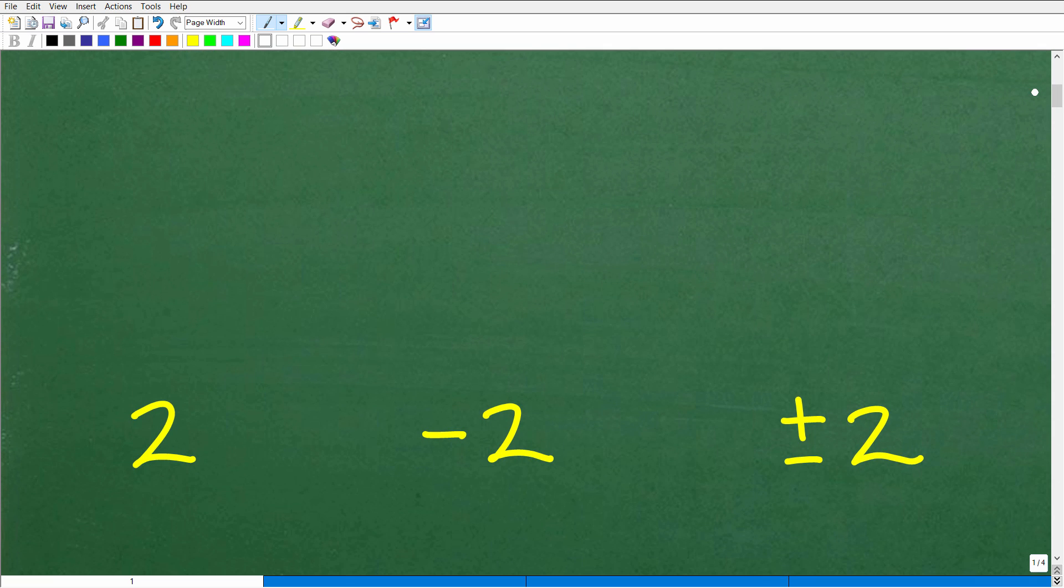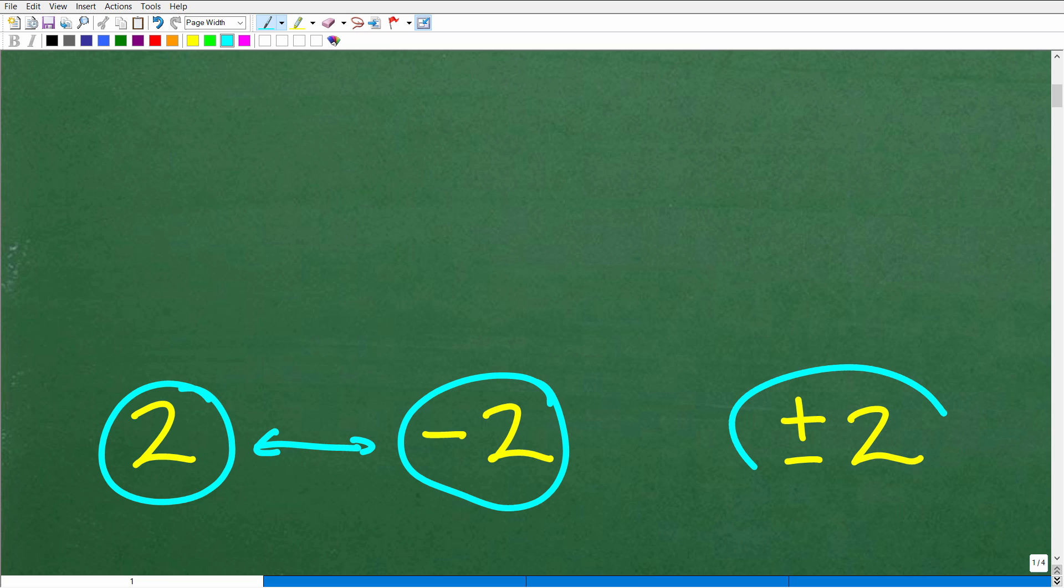I'm going to give you three options here. If you said 2, well, that's pretty good, but that's not the entire answer. If you answer negative 2, that's pretty good, but that's not the entire answer. In fact, the entire answer is both 2 and negative 2. So x is equal to positive and negative 2.